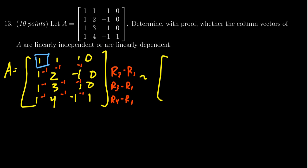So the first row stays the same: 1, 1, 1, 0. Then we're going to get 0, 1, -2, 0. 0, 2, 0, 0. And then 0, 3, -2, 1. This would then be the next matrix in this calculation here.